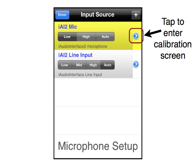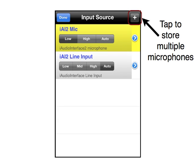Tap the blue triangle for the first entry to calibrate your microphone. If you have more than one microphone, tap the plus to add a new entry.